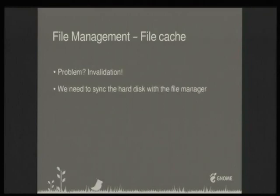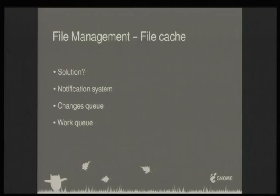The problem with any cache is invalidation — what happens when a file changes on disk? You need to synchronize the application because you're working with RAM data that is no longer valid. The solution requires a notification system: in Nautilus, objects connect to files they're interested in, and when a file changes those objects get notified. We use GLib signals — you use g_signal_connect to the change signal of the file, and whenever it changes the whole application is notified.